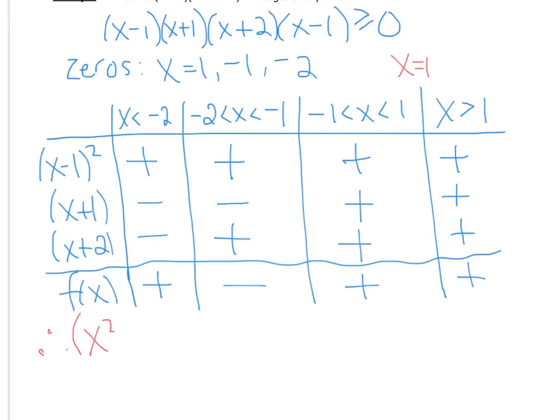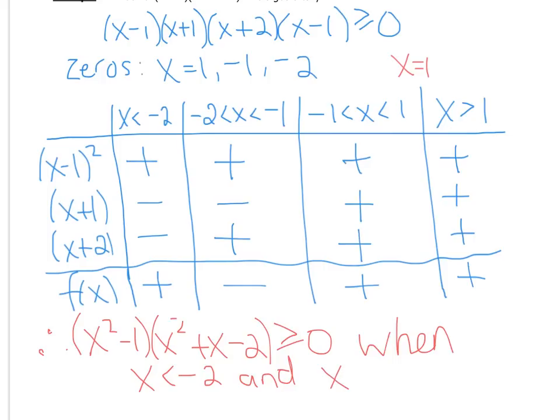Therefore then, take your original question, (x^2 - 1)(x^2 + x - 2) is greater than or equal to zero when x is greater than or equal to negative one. Now, I'm sorry, we should include the negative two as well here, because we want to know when it's equal to zero as well, and it's equal to zero at that place.